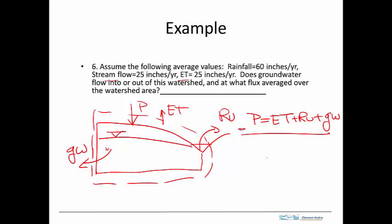So we have our balance - this is our volume balance - and we're interested in what the groundwater is. So we solve for it, and we just have P minus ET minus the runoff, and that equals 60 minus 25 minus 25. And let me write this as groundwater out.